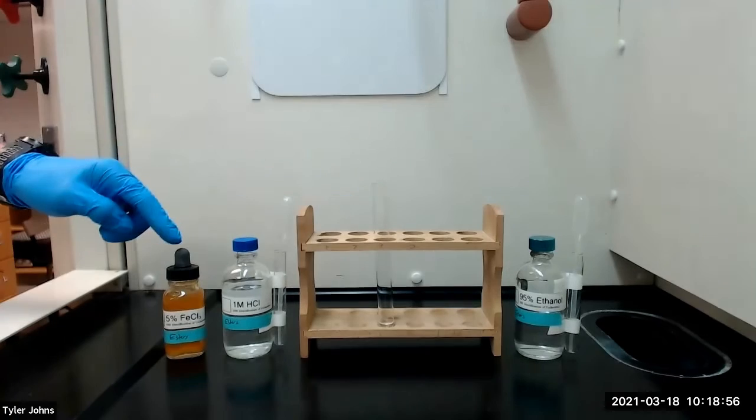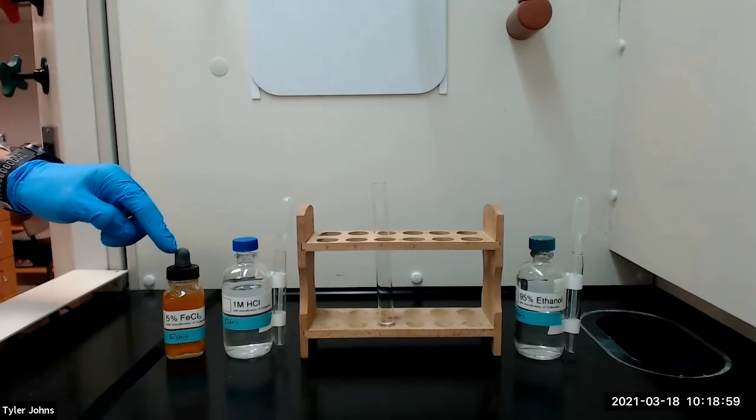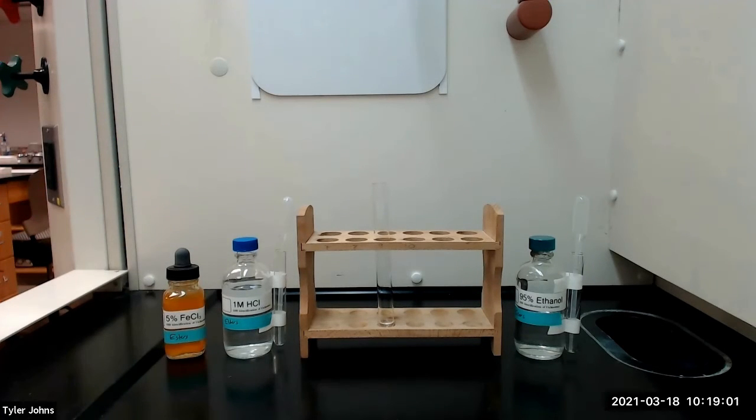We will then add a few drops of 5% ferric chloride solution. A positive test will give a deep burgundy, magenta, or reddish brown color.